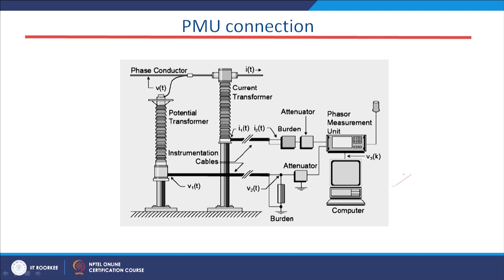A PMU connection snapshot shows the phase conductor, potential transformer, and current transformer. The current transformer is connected to the PMU terminal through a burden, and the instrument transformer is connected through an attenuator to the voltage terminal of the PMU. A computer is connected to the PMU interface to analyze the voltage and current phasor data; the PMU can also record frequency and rate of change of frequency if properly customized.